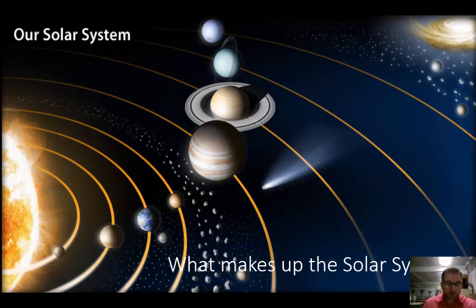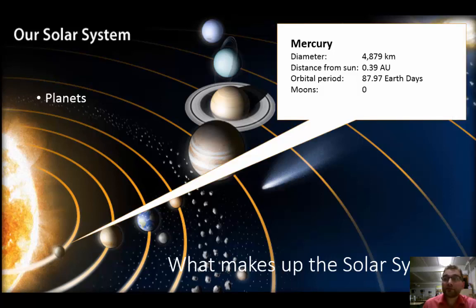We're going to look at a number of the basic facts about the planets in our solar system, starting closest to the sun with Mercury. Mercury has a diameter of 4,879 kilometers. It is approximately 0.39 astronomical units from the sun. It takes 87.97 Earth days to orbit the sun and it doesn't have any moons.